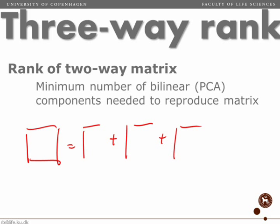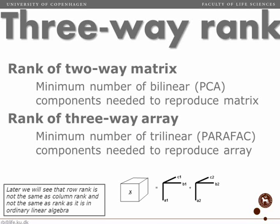Rank is a term that we know and it can be defined in different ways. But one way to define rank of a matrix is that the rank is the minimum number of PCA components that we need to reproduce the matrix exactly. So if I can describe a matrix by three PCA components, then the rank of that matrix is three. Now, it's exactly the same if we talk about three-way data. The rank of a three-way array is the number of PARAFAC components that we need to reproduce the array.